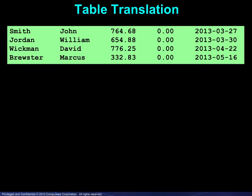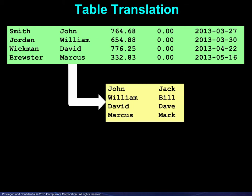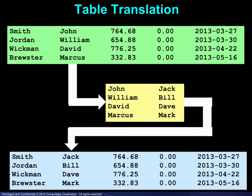A translation table may be used to look up and change data values. Here we look for first names in a table and replace them with the desired names appearing in the translation table.